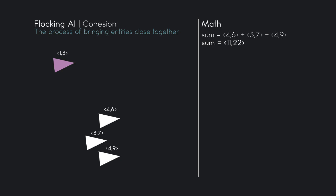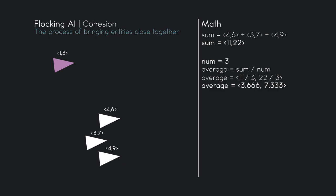Now we need to do one more step before we calculate the center of mass — we need to average it out. We take that sum vector and divide it by the number of entities used in the calculation. There are three entities in that calculation, so we divide by 3. We take 11 divided by 3 and 22 divided by 3, which gives us 3.666 repeating and 7.333 repeating. That vector — three point six six six, seven point three three three — is the center of mass.